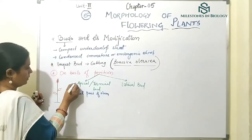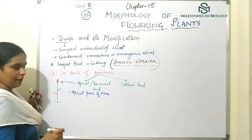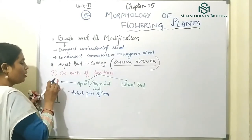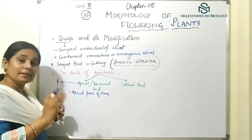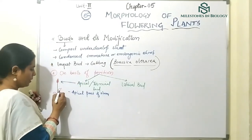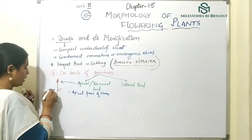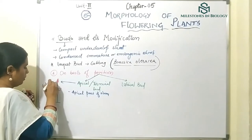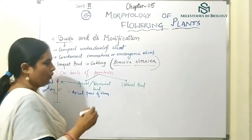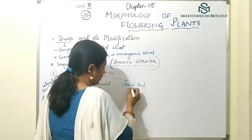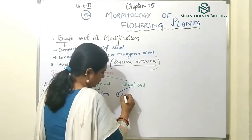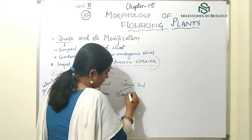The apical bud is present at the apical part of the stem. Apart from this, if buds develop on the other sides or other parts of the stem, those will be called lateral buds. Lateral buds are of different types; number one is the axillary bud.